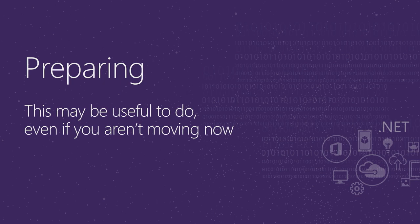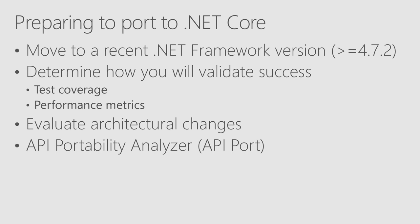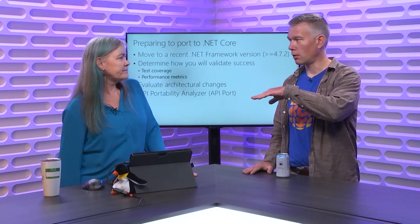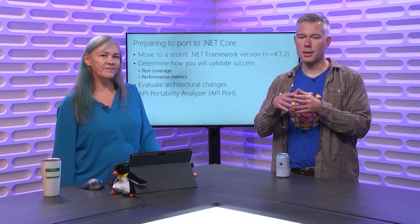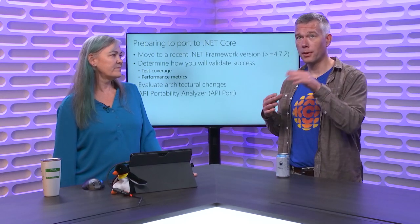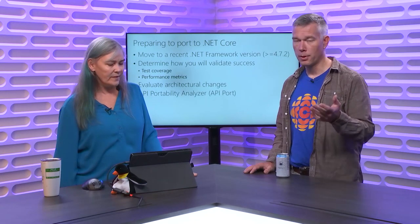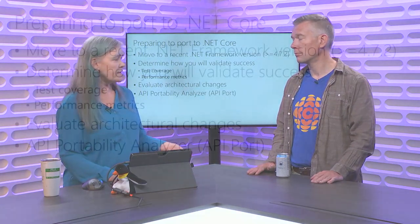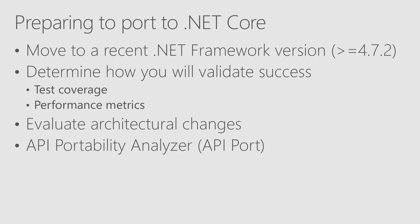Preparing to port to .NET Core has a couple of steps. The first is: move to a recent version of .NET Framework. If you're back on 4.5 or earlier, settle that first. There were significant breaking changes at a few points in the .NET Framework journey, and you need to make sure you've gotten through all of those waves. .NET Framework 4.7.2 and later are the most similar to .NET Core — so validate that your app runs successfully on 4.7.2 or 4.8. Also, you want to know how you're going to validate success — test coverage is one good measure, and performance metrics is important too.